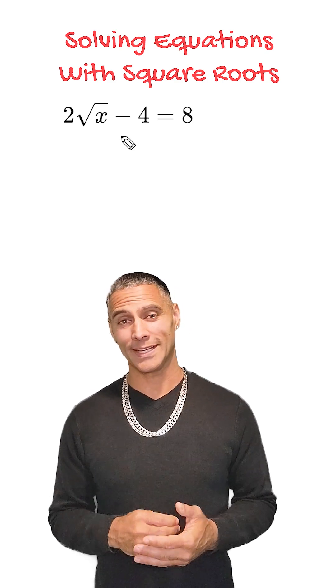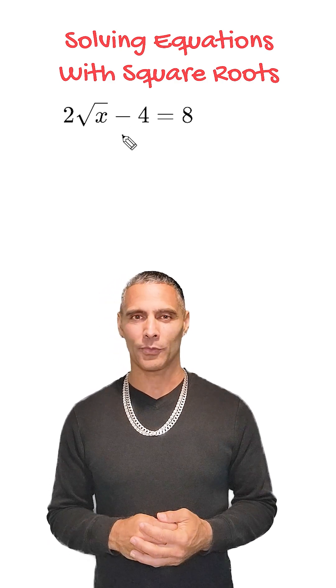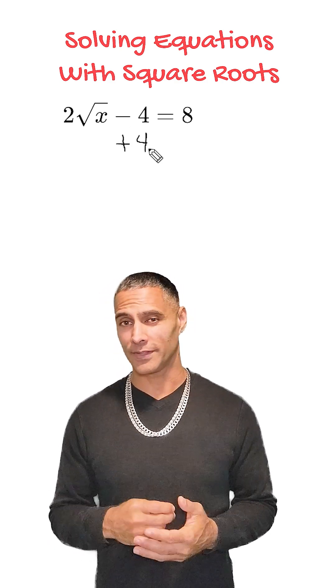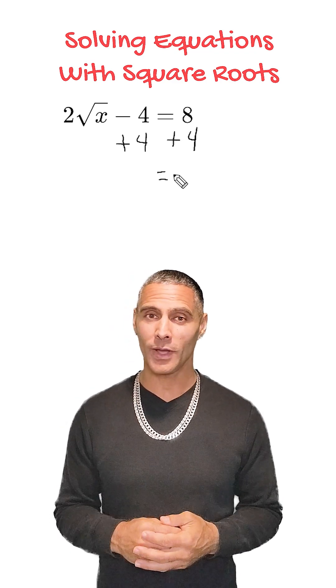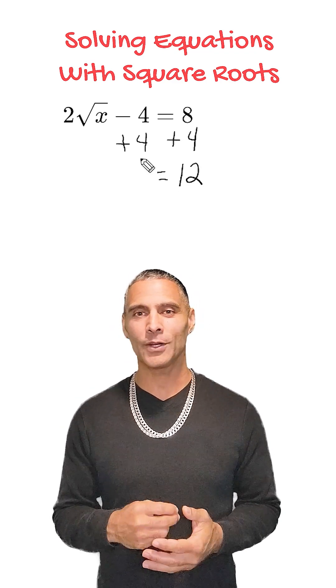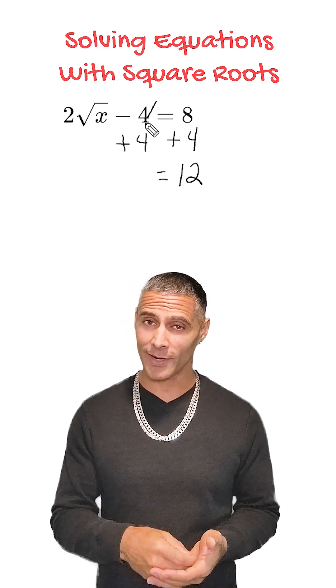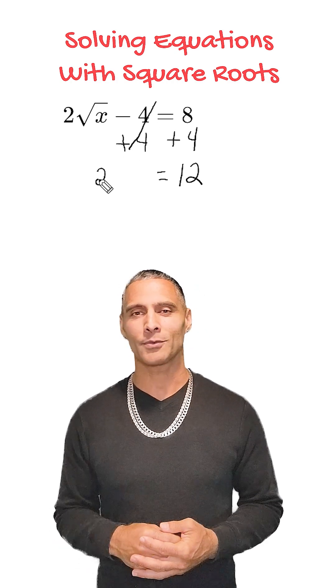Since negative 4 is being subtracted, the inverse operation is to add 4 to both sides of the equation. When we add 4 to the right-hand side, we get positive 12. On the left-hand side, the negative 4 and the positive 4 cancel each other out, leaving us with 2 times the square root of x.